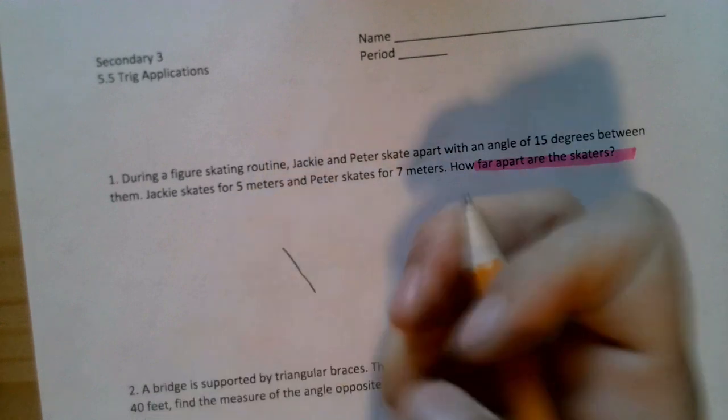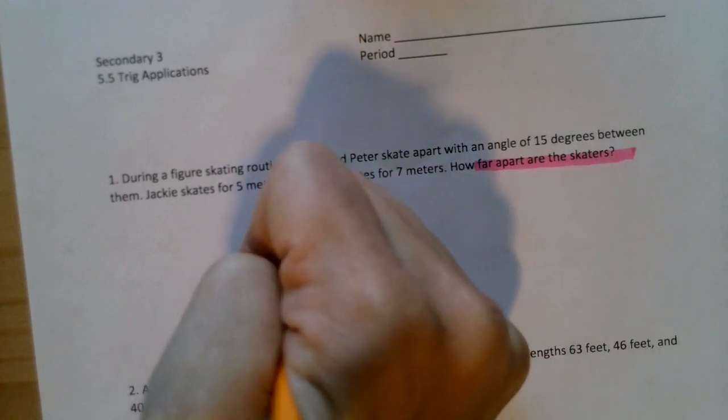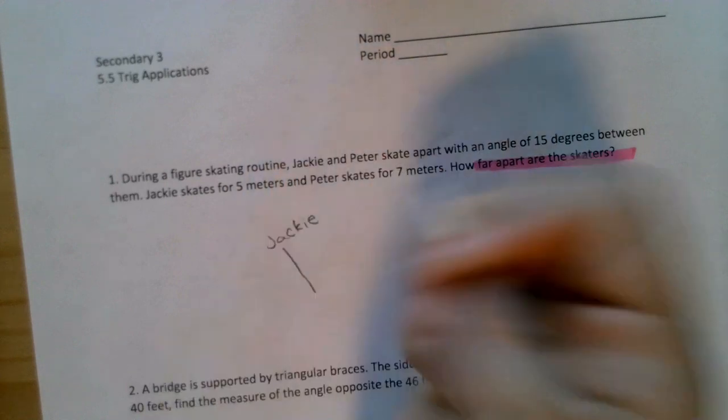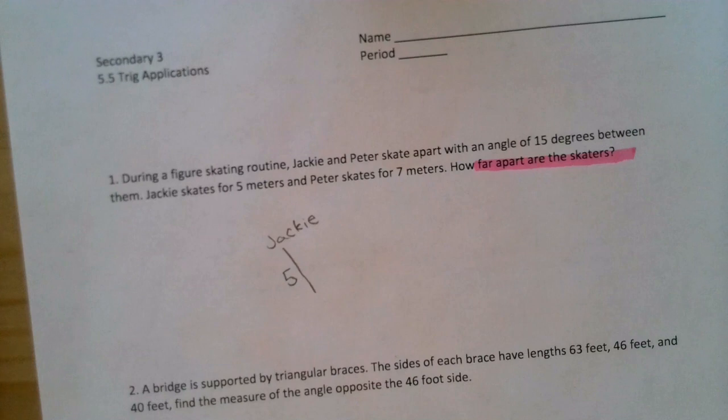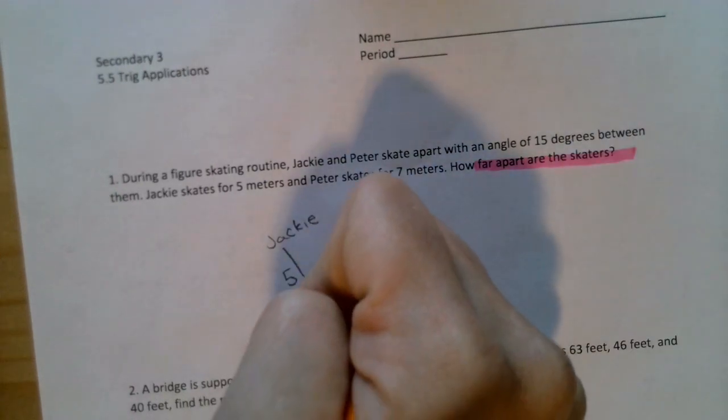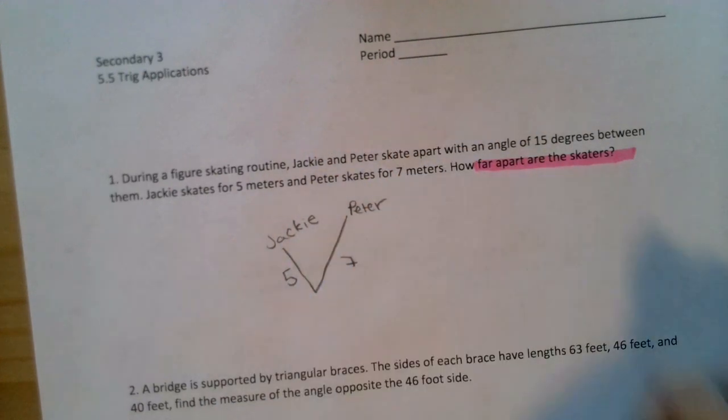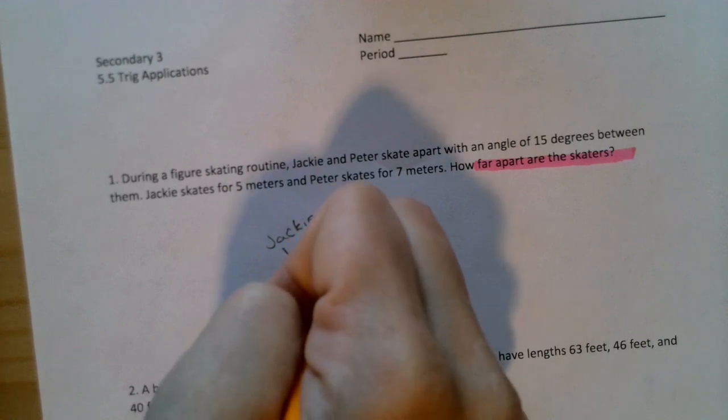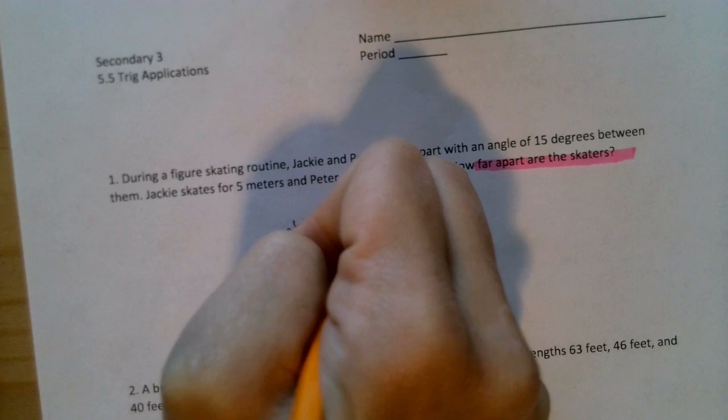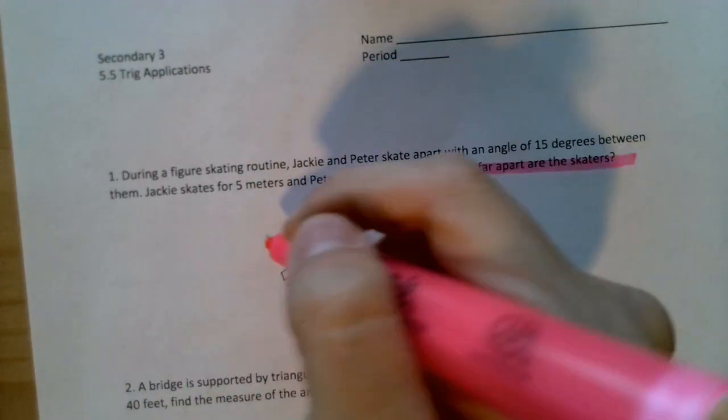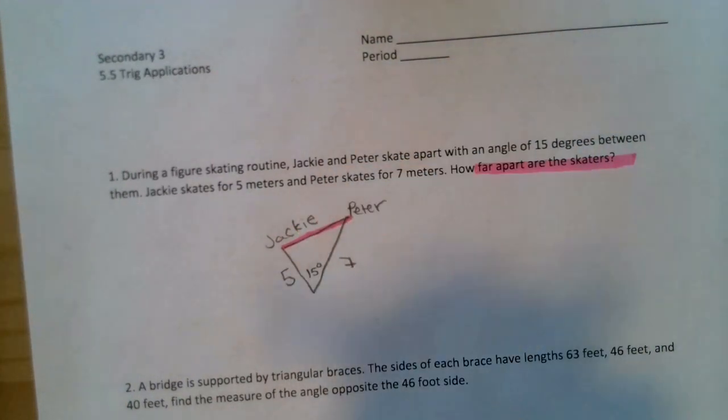So Jackie will skate for 5 meters. And I'm going to label everything that I see so I know I draw it out correctly. And then Peter skates for 7 meters. They are 15 degrees in between them. So what we are trying to find is how far they are apart. The way we learned how to do Law of Sines and Law of Cosines was to label our A, B, C. When it comes to story problems, you can label the A, B, and C no matter what angle you want.